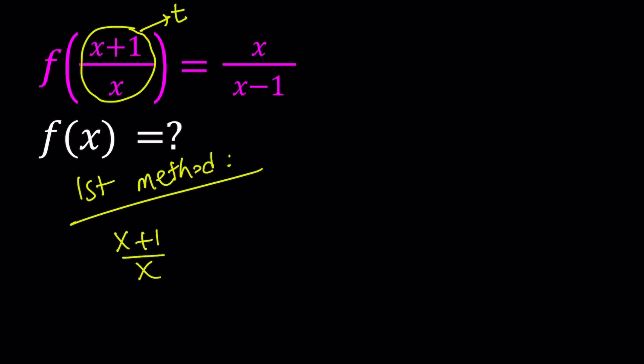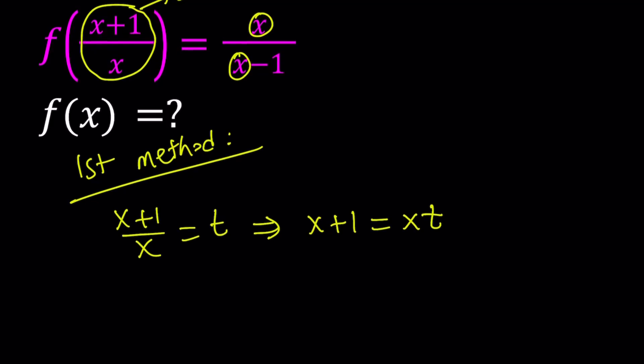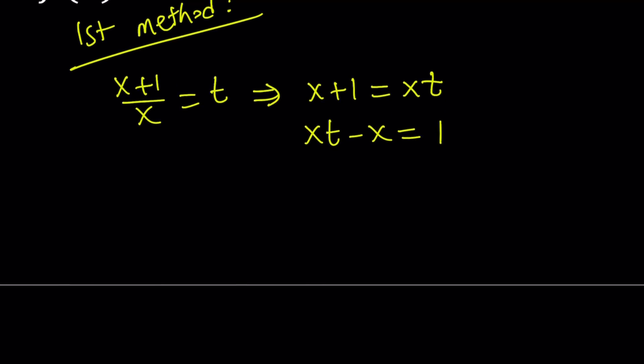That implies x plus 1 over x equals t. Then we get x plus 1 equals x t. Now our goal is to solve for x in terms of t so we can substitute that on the right hand side as well. So let's go ahead and put the x terms together, and then let's factor out x. And from here we find x equals 1 over t minus 1.